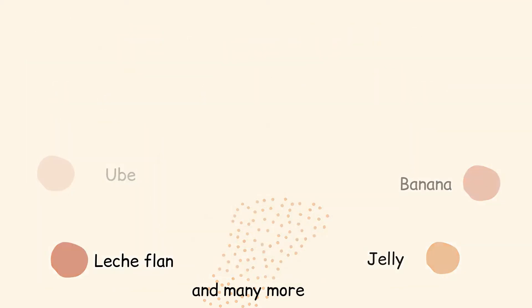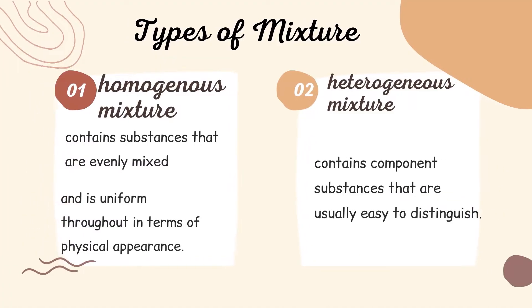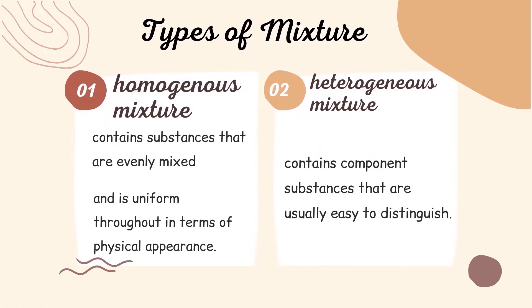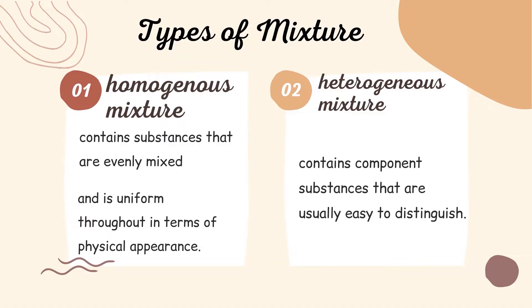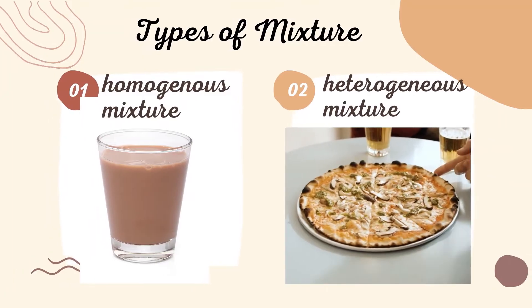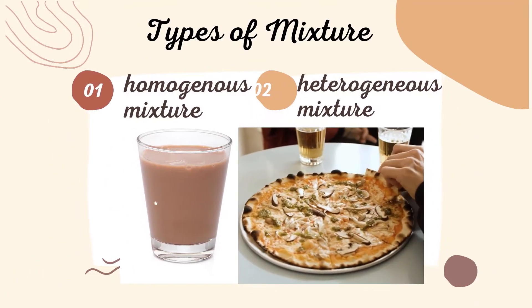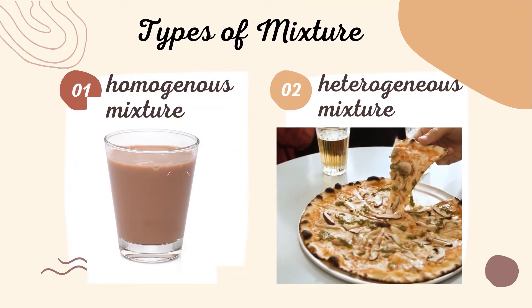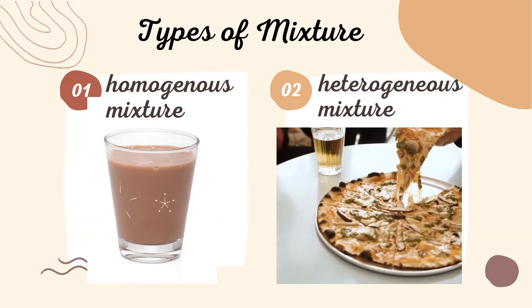Good answer. Now we have types of mixture: we have homogeneous and heterogeneous mixture. Homo means it contains substances that are evenly mixed, or pantay-pantay, used as uniform throughout in terms of physical appearance. Second, it contains component substances that are usually easy to distinguish. These are the examples — a chocolate drink and pizza. In chocolate drink, it's not easy to distinguish the choco and sugar, while in a pizza you can easily distinguish the ingredients.